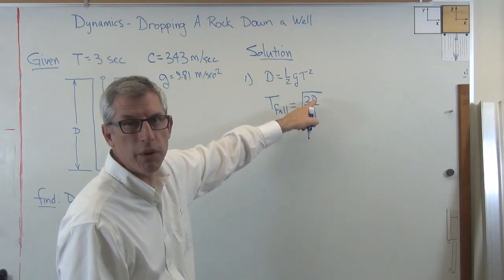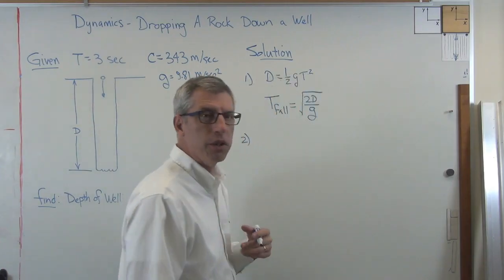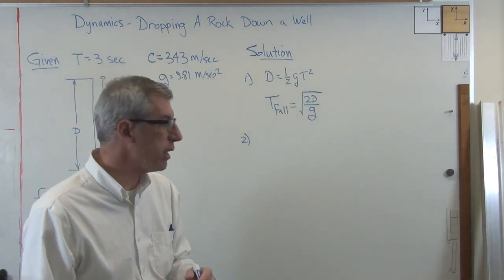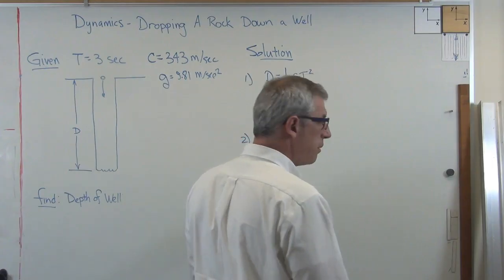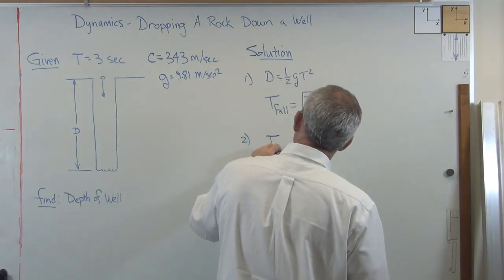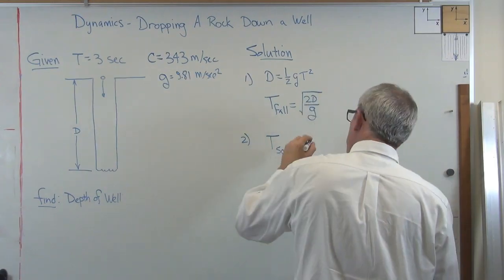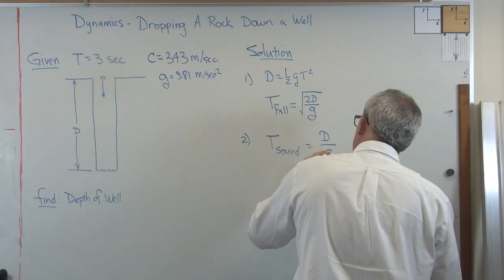Okay, two, the next thing we need to know is how long does it take the sound to get back up the well. Well, time times rate is distance, right? So time it takes the sound to get back up the well is going to equal the distance over C, where C is the speed of sound in air, that's 343 meters per second.